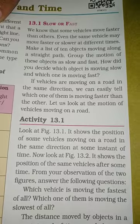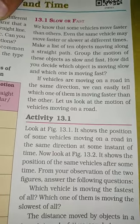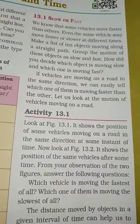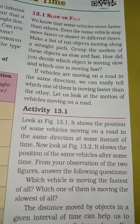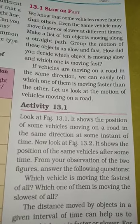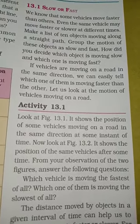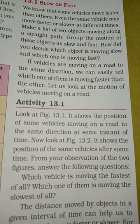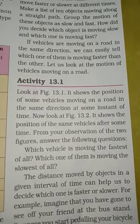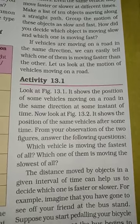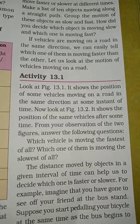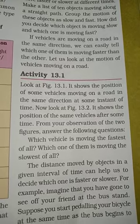If vehicles are moving on a road in the same direction, we can easily tell which one of them is moving faster than the other. Looking at figure 13.1, it shows the position of some vehicles moving on a road in the same direction at the same instant of time.